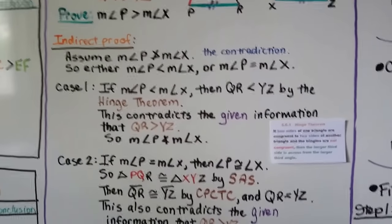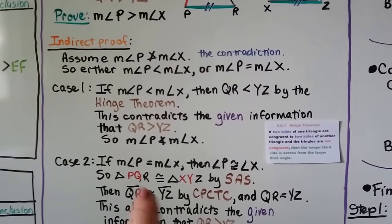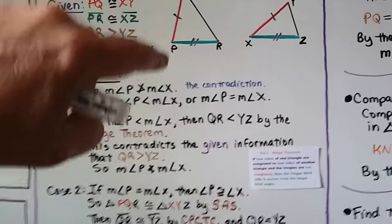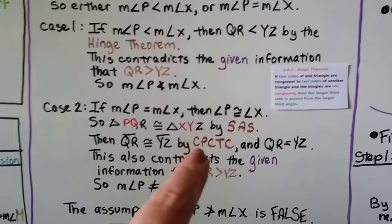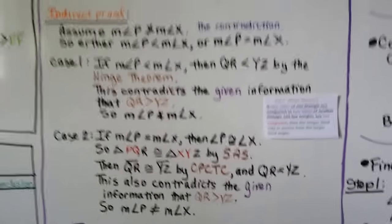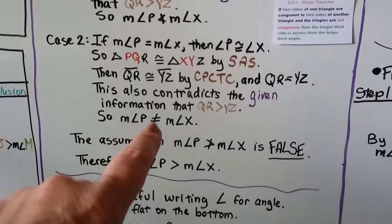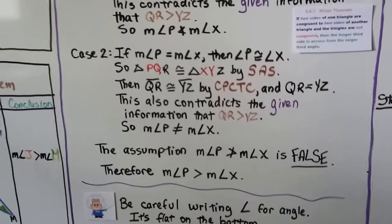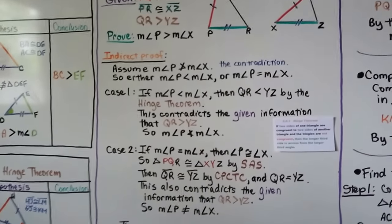In Case 2, let's try equals. If the measure of angle P is equal to the measure of angle X, then the angles are congruent, so triangle PQR would be congruent to triangle XYZ by Side-Angle-Side. Then segment QR would be congruent to segment YZ by CPCTC — congruent parts of congruent triangles are congruent — making QR equal to YZ. But that's a contradiction, since the given says QR is greater than YZ. So angle P cannot be equal to angle X either. The assumption that angle P is not greater than angle X is false — it is greater. We proved it wasn't smaller and wasn't equal, therefore it must be greater.